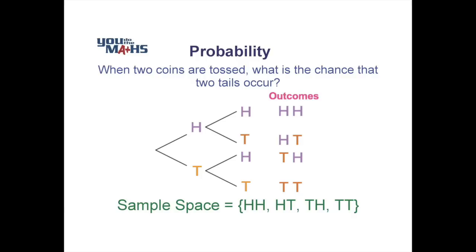Our sample space for all possibilities that can occur for two coins is: head and head, head and tail, tail and head, or two tails. Now the interesting thing to consider is that if we look at the number of tails that can occur, we've got three possibilities — no tails, one tail, or two tails — and those probabilities are not equal, because the chance of getting one tail is twice as likely as the chance of getting no tails or two tails.